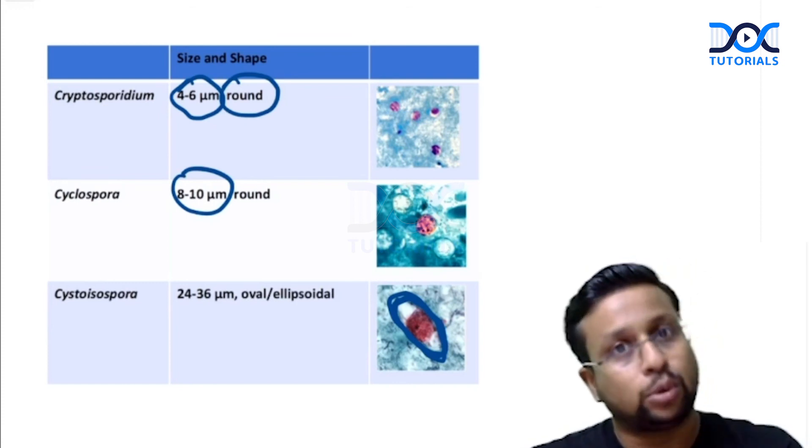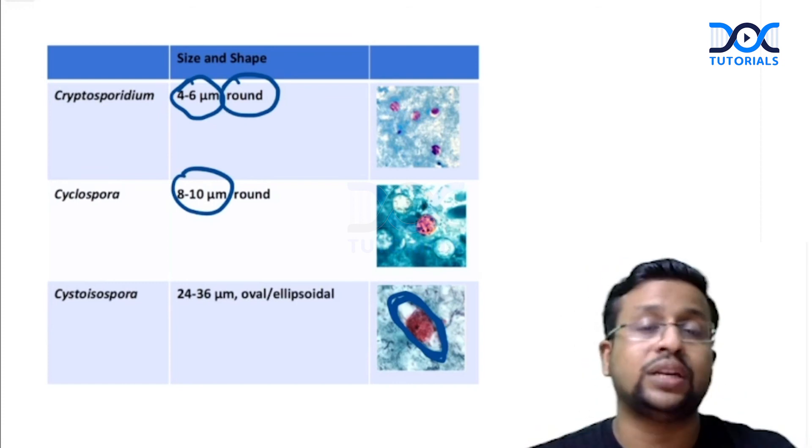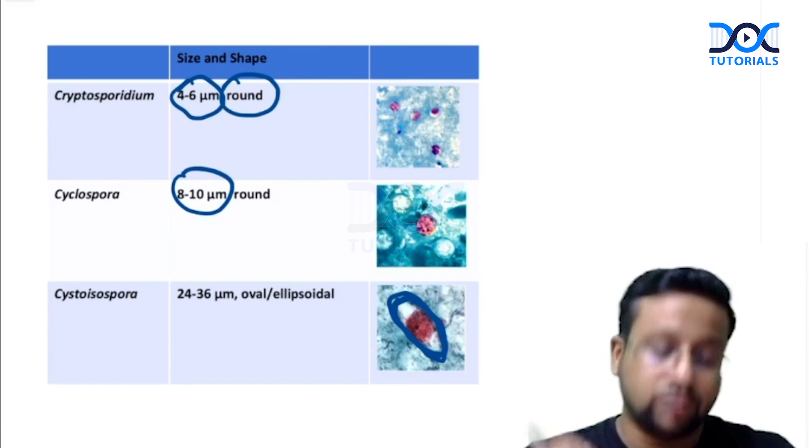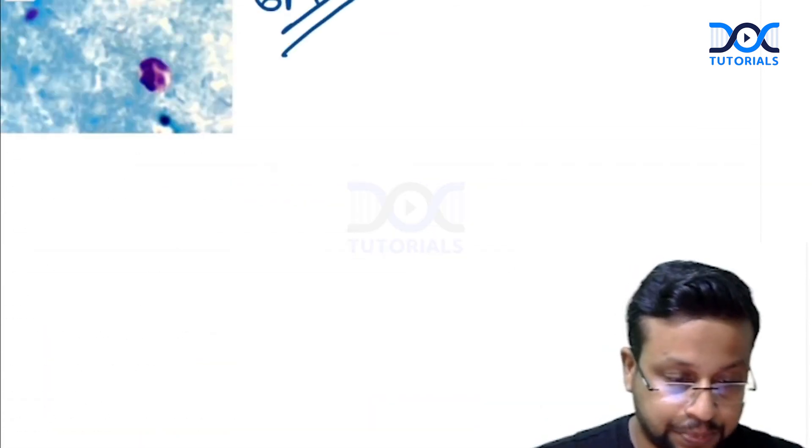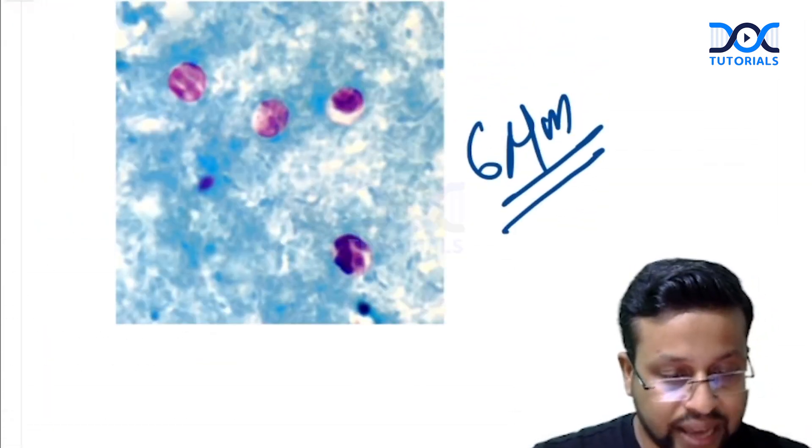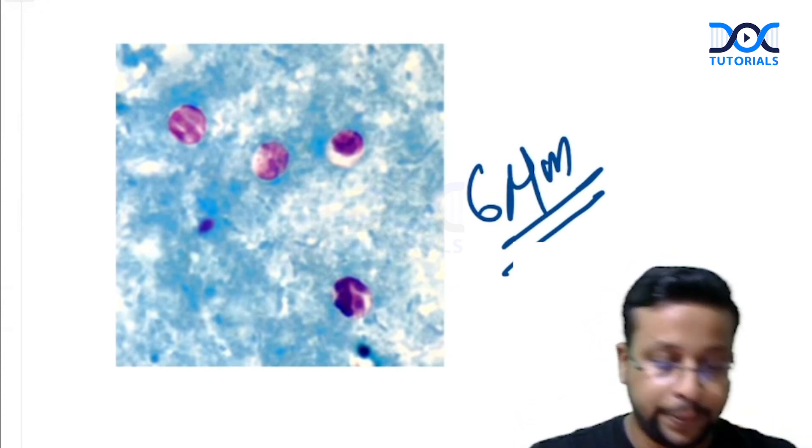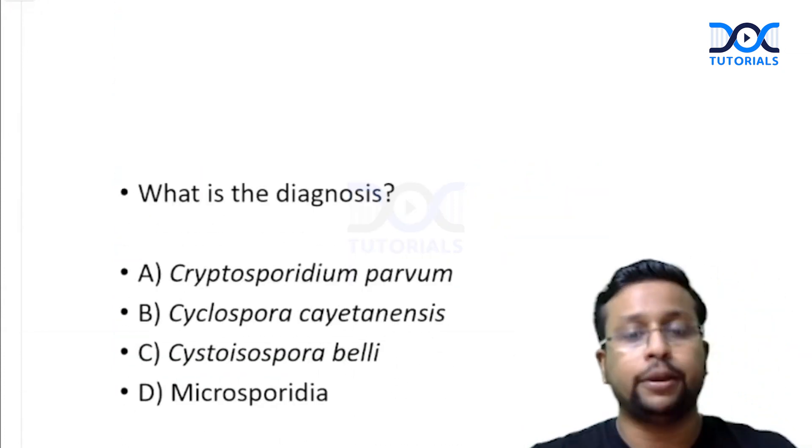So here we have a 4 to 6 micrometer sized organism which is round in shape, which is given in this question. So the answer here will be Cryptosporidium parvum. Thank you.